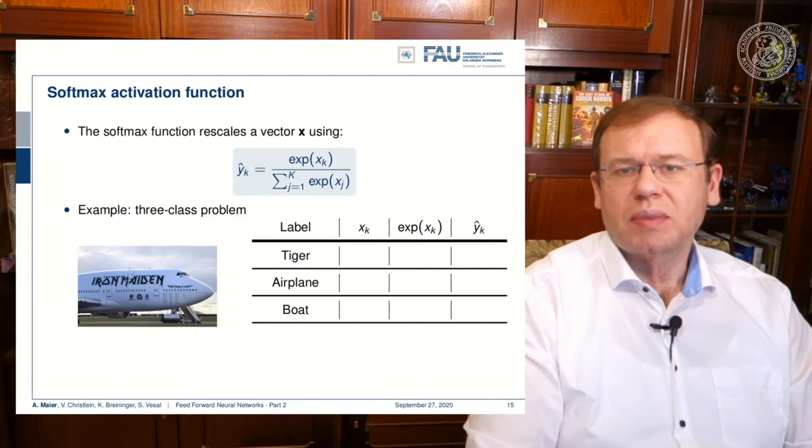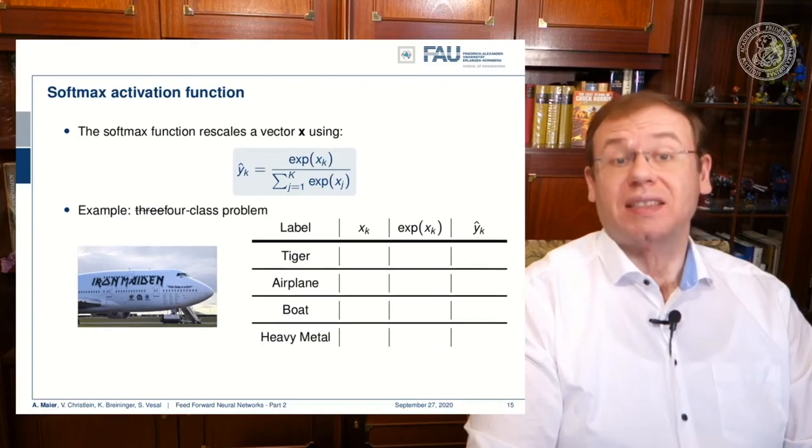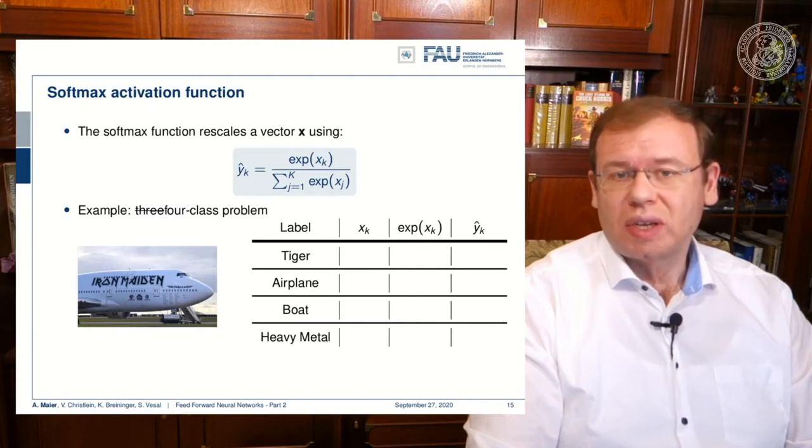Now let's look into an example. So let's say this is our input to our neural network, you see the small image on the left. Now you introduce labels for this four class problem.